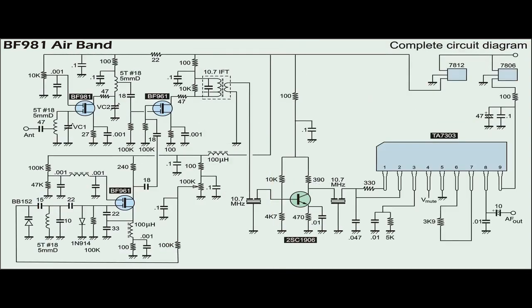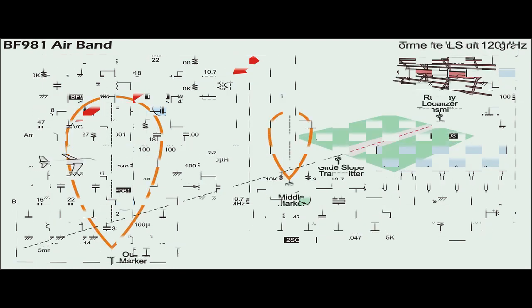This slide shows the circuit diagram in full. Two variable capacitors and one IF transformer need to be tuned for optimum performance. The receiver is tuned to 120 MHz where the ILS is located, and the capacitors and transformer are then adjusted to their optimum.